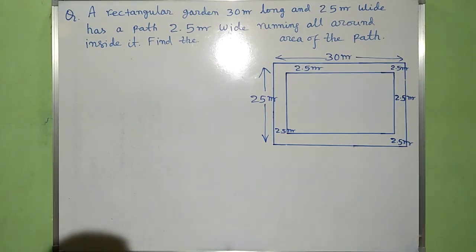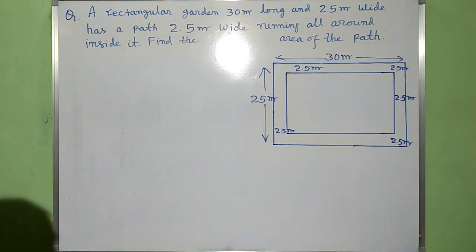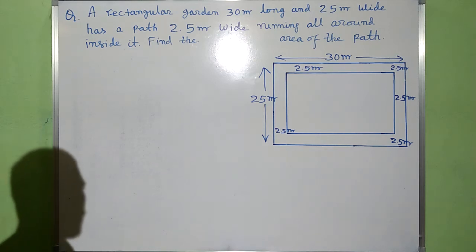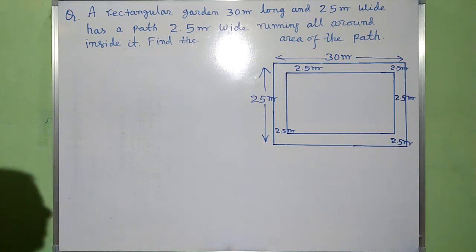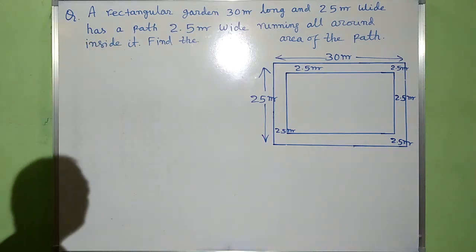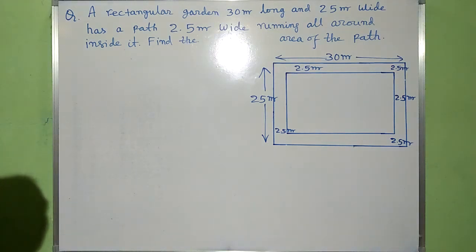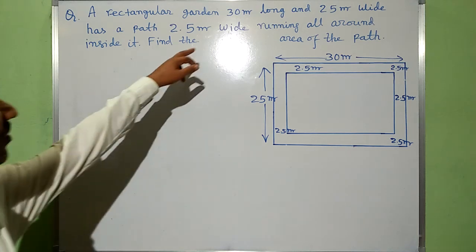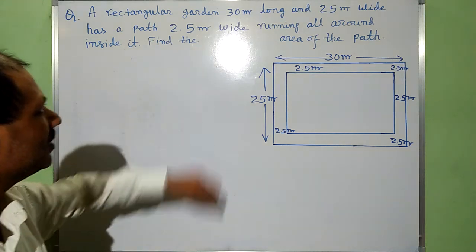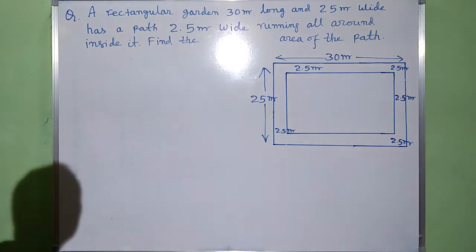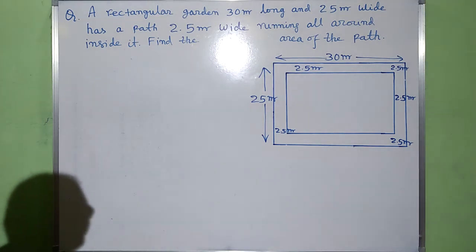Namaste everyone. Here I am going to solve one question which is related to area of a path. The question runs like this: a rectangular garden 30m long and 25m wide has a path 2.5m wide running all around inside it. Find the area of the path.